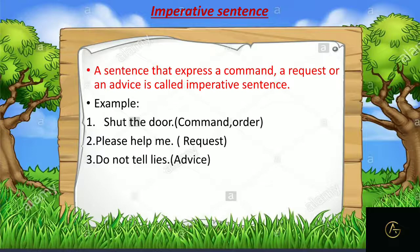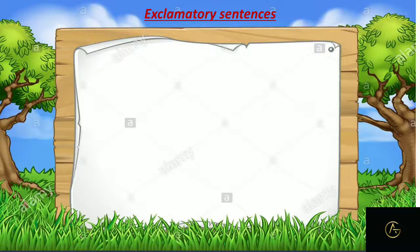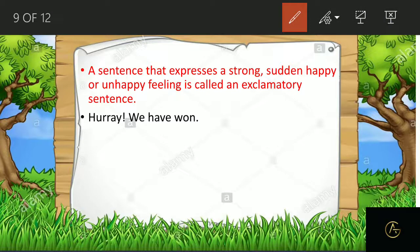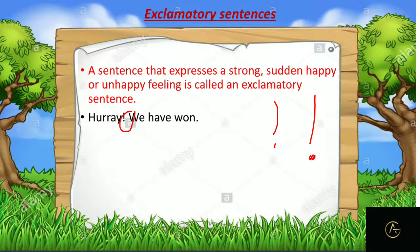The fourth type is exclamatory sentences, which express your inner feelings. A sentence that expresses a strong, happy or unhappy feeling is called an exclamatory sentence. Examples: 'Hooray! We have won!' — that 'wow' or 'hooray' with an exclamation mark is the exclamatory sign. 'Alas! I could not make it' — that is a sad expression. The exclamation mark defines the exclamatory sentence.